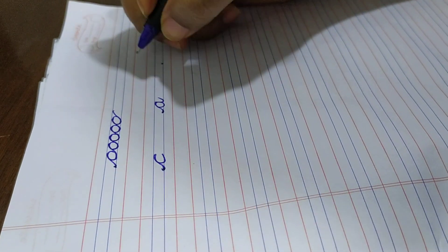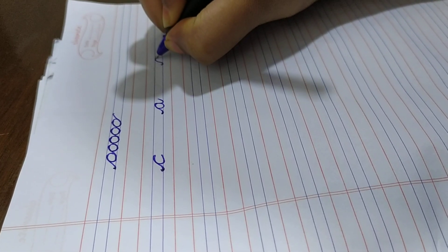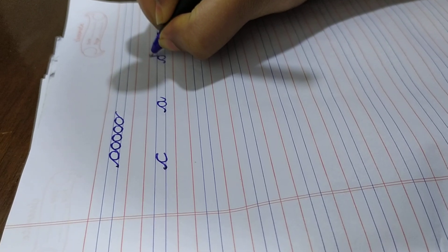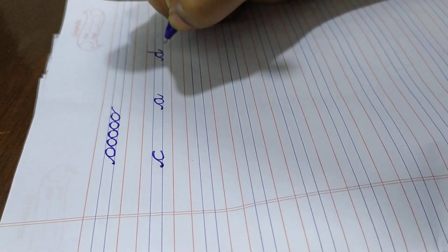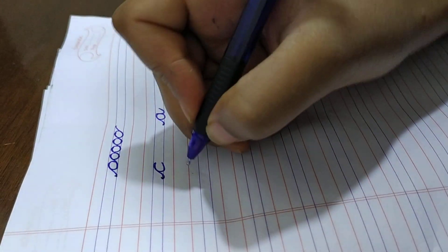Next letter is small cursive d. Make a dot, draw a stroke and touch to the red line, drag it down. It's small cursive d.